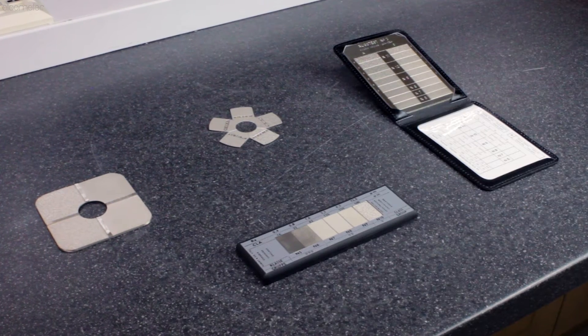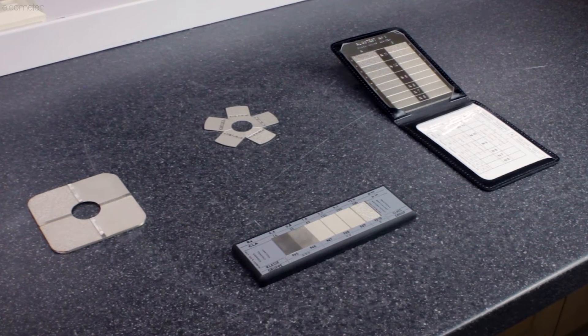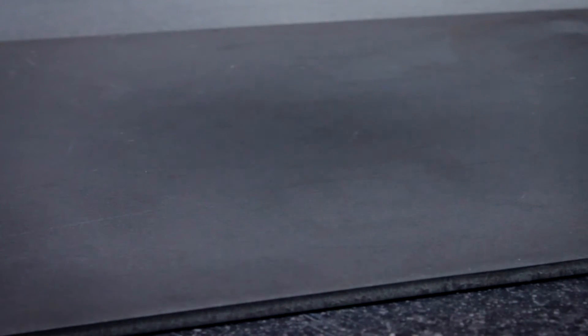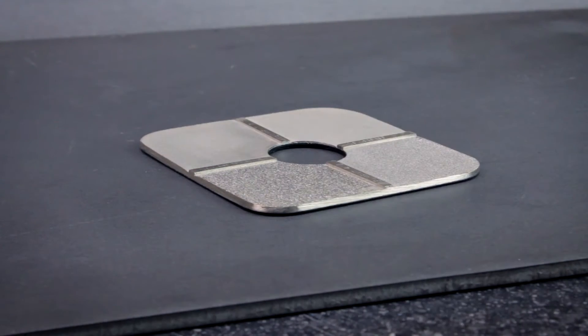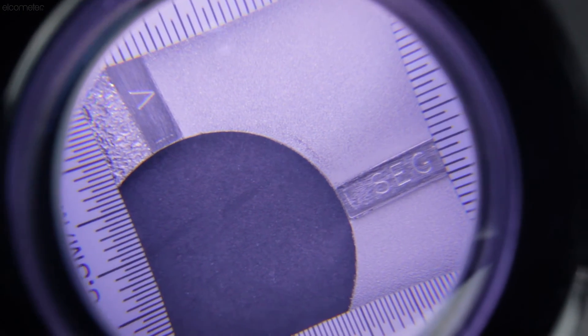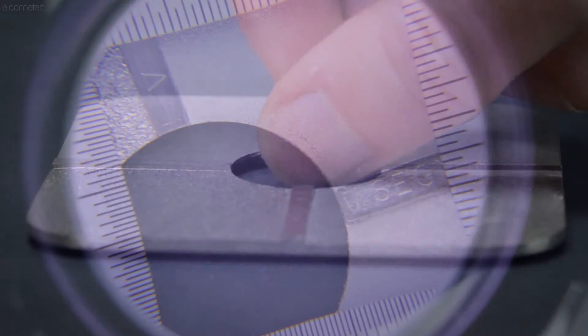Surface comparators are flat metal plates which contain a number of reference surface profiles. The comparator is placed on the surface, which is compared with the reference profiles through either sight or touch. The profile is then determined and recorded.